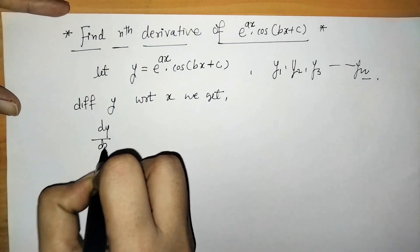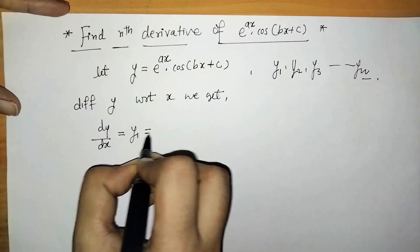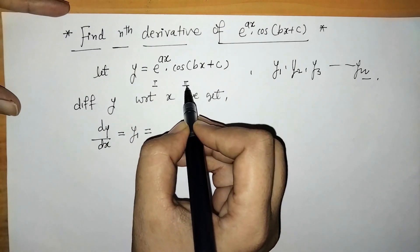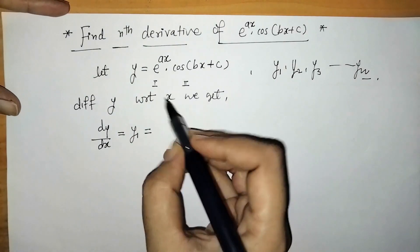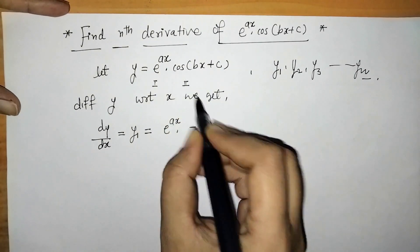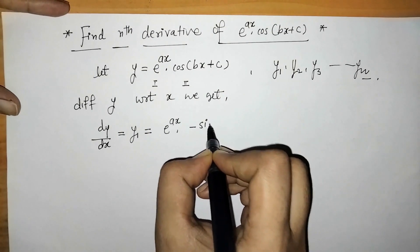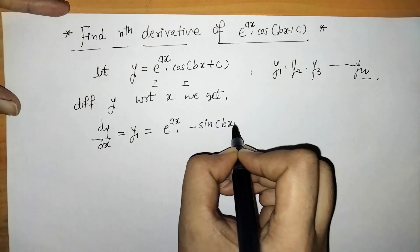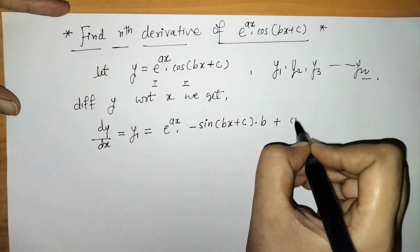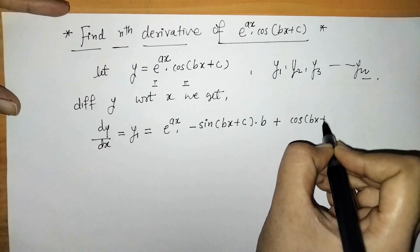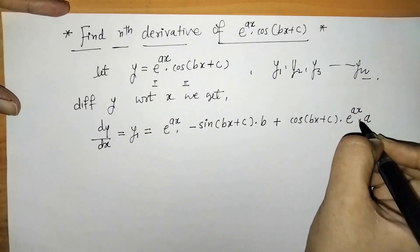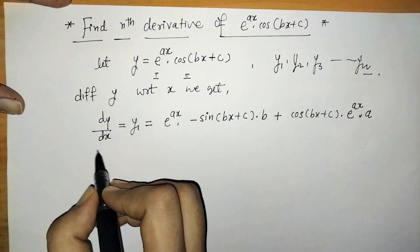Differentiating y we get first derivative y1, and here we have two different functions, so we have to apply the product rule of differentiation. Here we have first function into derivative of second — cos derivative gives minus sin of bx plus c into b — and second function as it is into derivative of first, which is e raised to ax into a. So we got this first derivative.